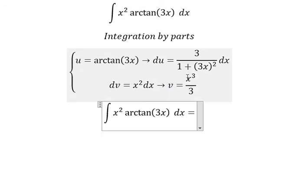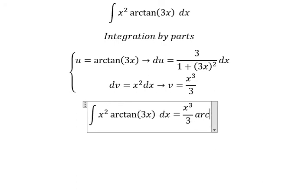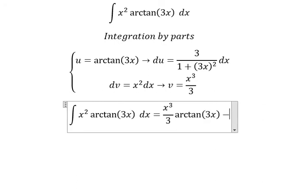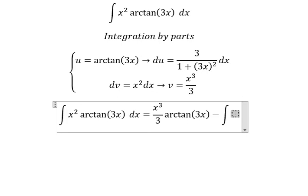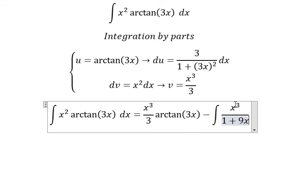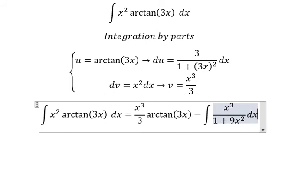So we have u multiplied by v minus the integral of v multiplied by du. So 3 and 3 they will cancel. Now we just have only the integral of x³ over 1 plus 9x² dx.